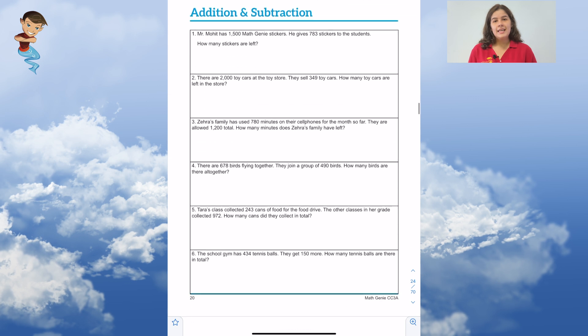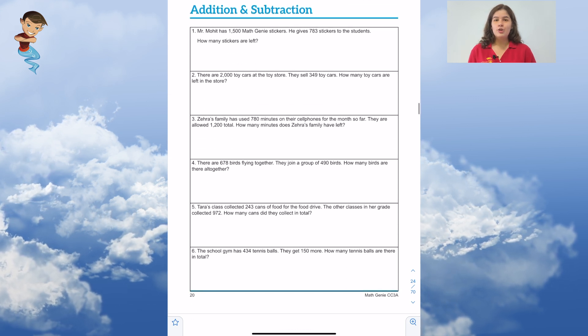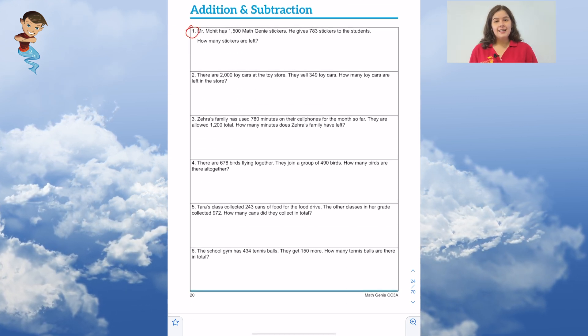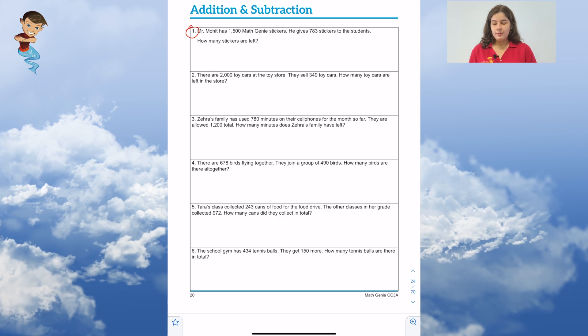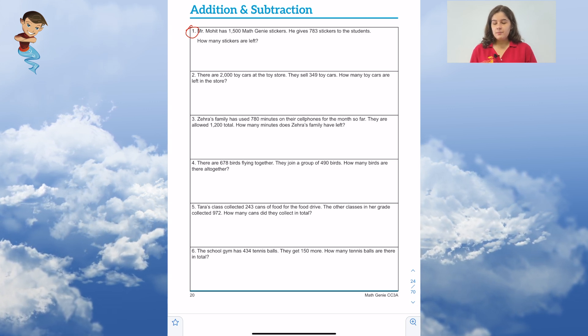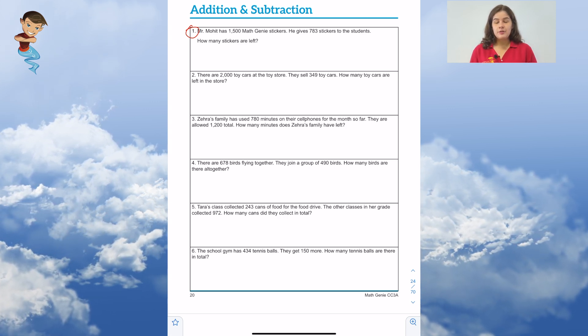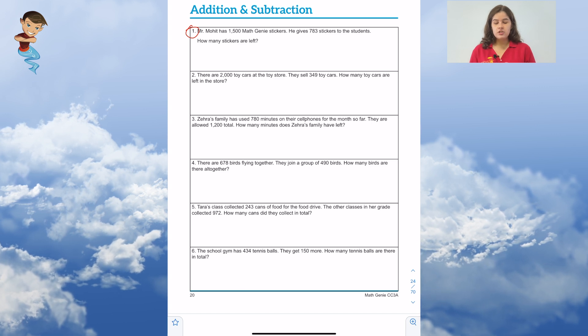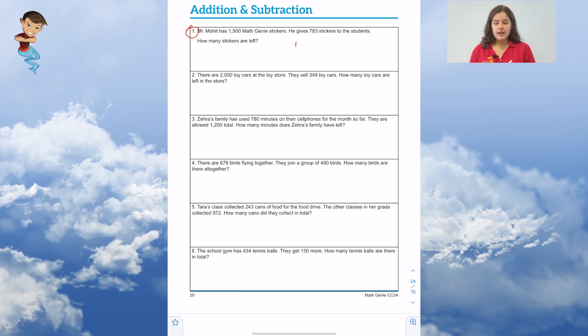Next, we're going to take a look at how to complete addition and subtraction word problems. On our next page, we're going to work on a word problem. It reads, Mr. Mohit has 1,500 Math Genie stickers. So that is our starting point. Have your child write that on their paper.